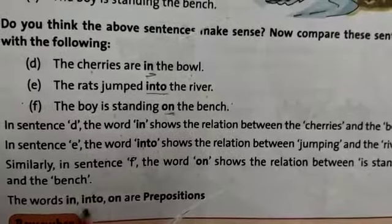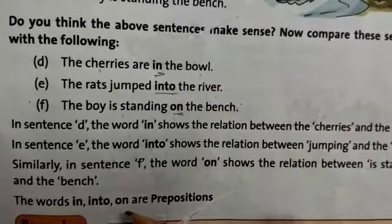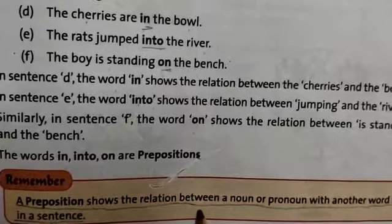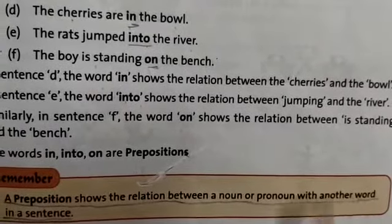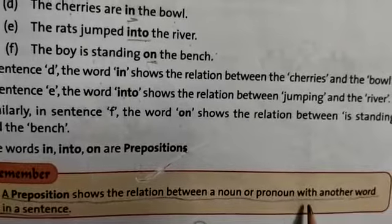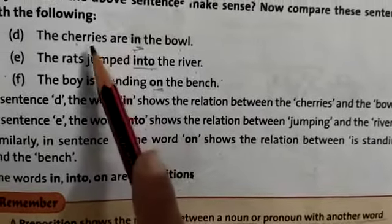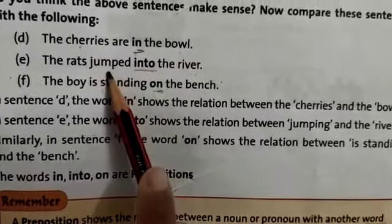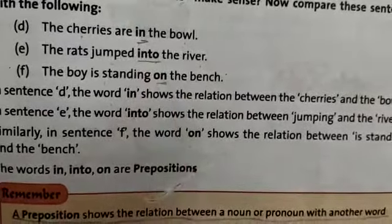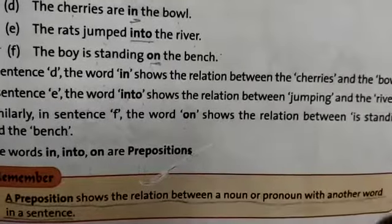The words 'in,' 'into,' and 'on' are prepositions. A preposition shows the relation between a noun or pronoun with another word in the sentence. Here, cherries and bowl, jumped and river, standing and bench — these show the relation between two words.